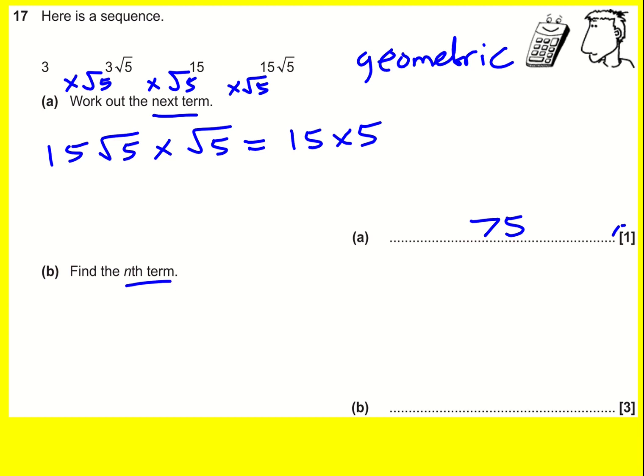The nth term is a bit trickier. I'm going to take a bit of time on this. Like I said before, I'm timesing by root 5 every time, but this one itself is not root 5. So it's going to be something like root 5 to the power of n because that's what's going on - I'm timesing by root 5 every time - but it's not this because it started with a 3.